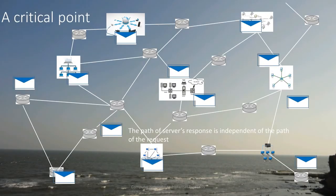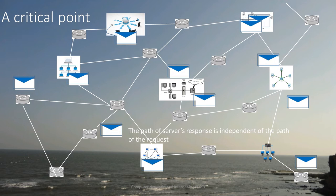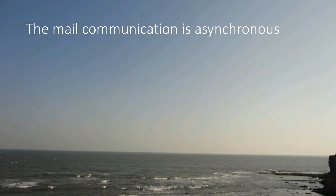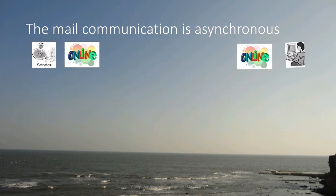Friends, let us start the second phase of the third module. We have already seen how the mailing process takes advantage of every layer and we will continue further. There is a very critical point: the path of the sender may be different than the receiver. You can see that it travels a path which is not the same as the receiving path.